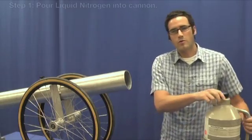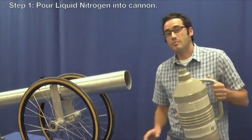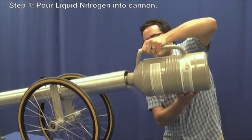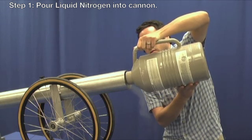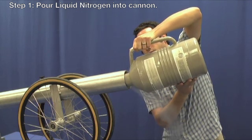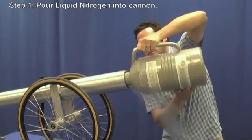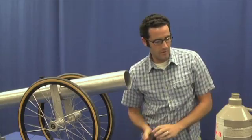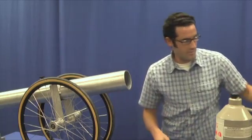First thing we do is we pour some of our liquid nitrogen into the barrel of the cannon. As soon as we have enough liquid nitrogen in the cannon barrel, it starts turning to gas immediately.